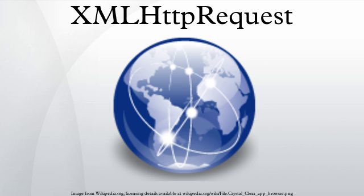The object was also implemented in Opera 8.0 released in April 2005, and iCab 3.0b352 released in September 2005. The World Wide Web Consortium published a working draft specification for the XMLHttpRequest object on April 5th, 2006, edited by Anne van Kesteren of Opera Software and Dean Jackson of W3C. Its goal is to document a minimum set of interoperable features based on existing implementations, allowing web developers to use these features without platform-specific code. The last revision to the specification was on November 19th, 2009, being a last call working draft.